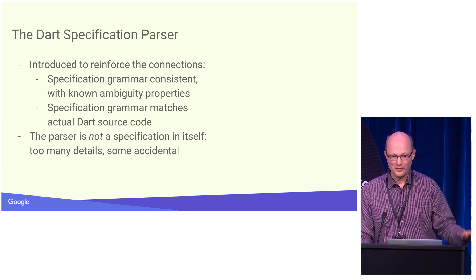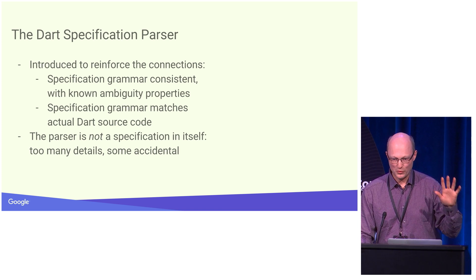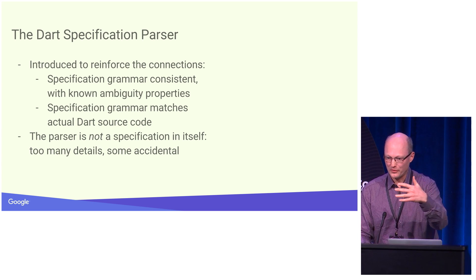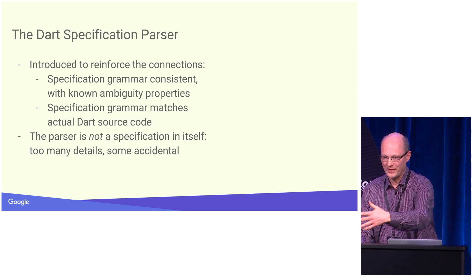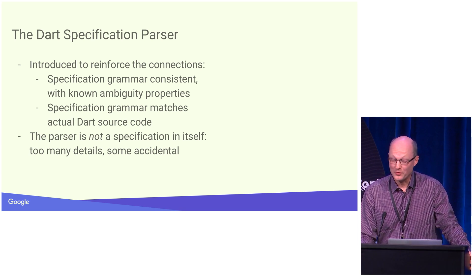We also want to make sure that the specification grammar matches the actual Dart source code. So we can run this tool which is a parser generated by the Antler3 tool parser generator, and we can see that the specification of the grammar will actually match the source code out there.